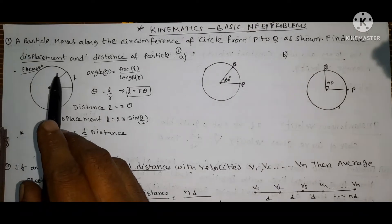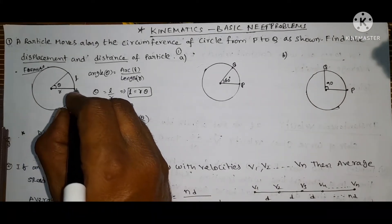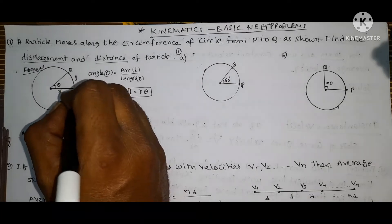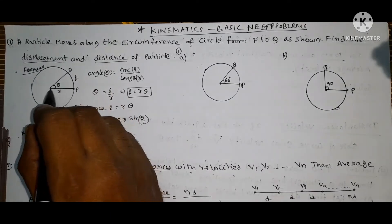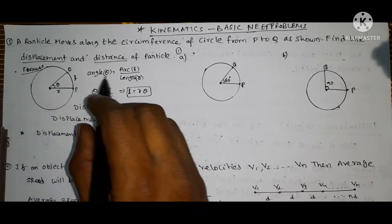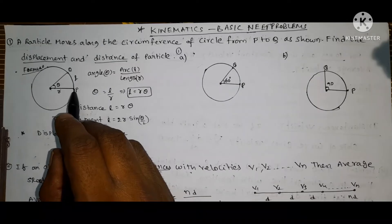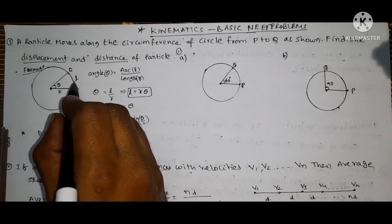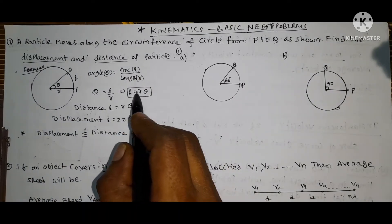If a particle is moving in a circular manner from point P, moving along the arc to another point, this arc subtends angle theta. The radius is R. From the sector formula, theta equals arc divided by radius, so the arc length L equals R theta. This curved path length is the distance.